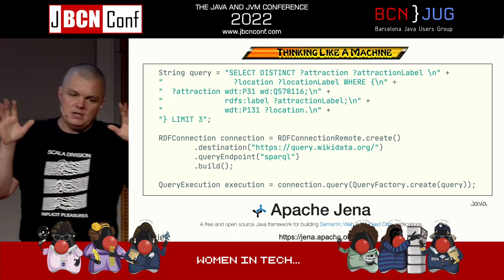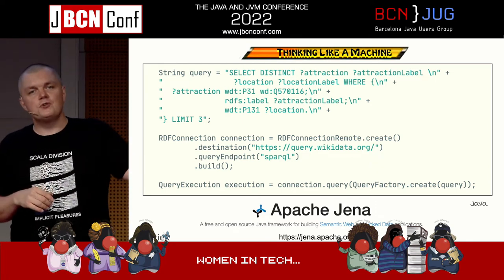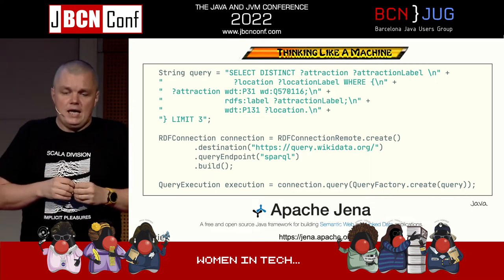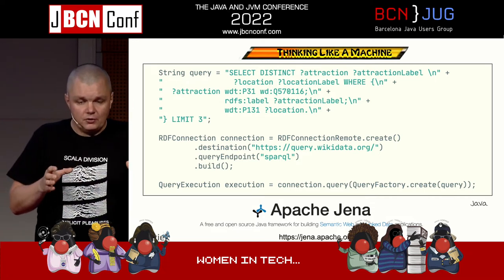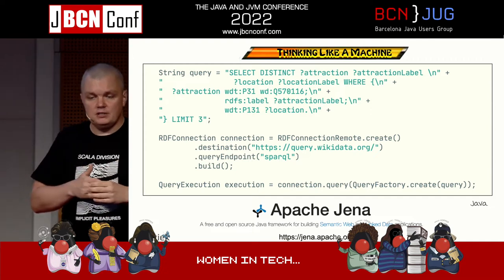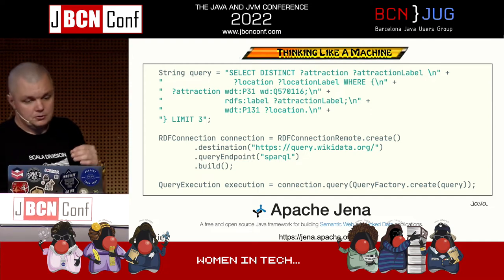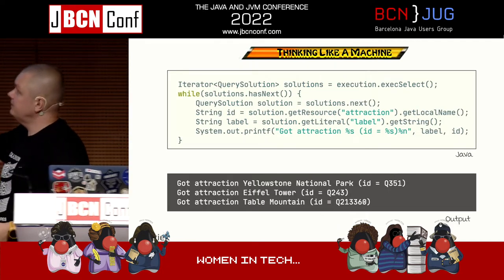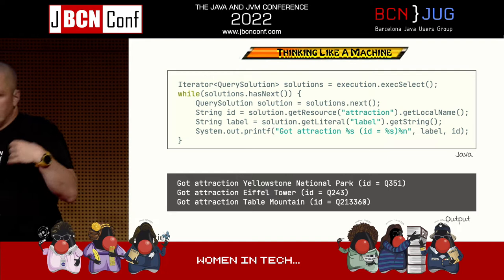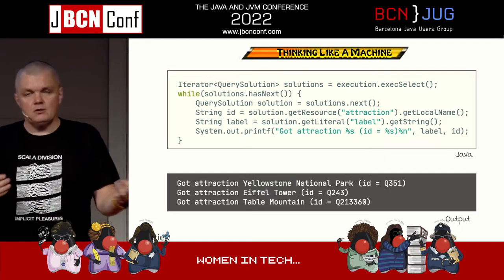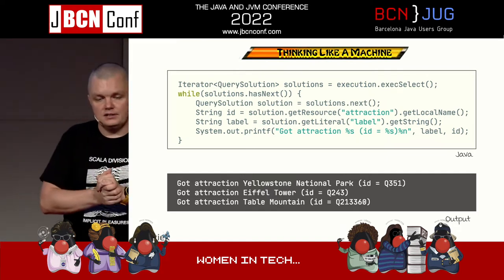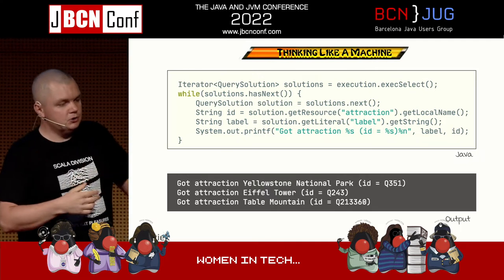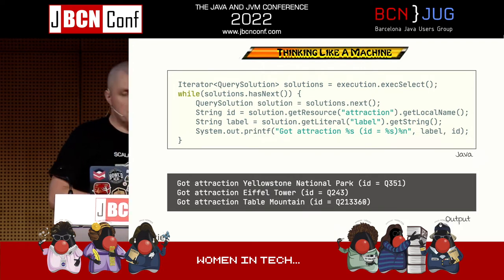First, let me show you how the imperative usage of the Apache Jena API looks. We have a SPARQL query that provides three random tourist attractions. We create a connection to https://query.wikidata.org. Then we create a query execution and call execSelect, which provides an iterator of query solutions. While it has the next solution, we parse some ID, some label, and print it out. In my case, the results were Yellowstone, Eiffel Tower, and Table Mountain.